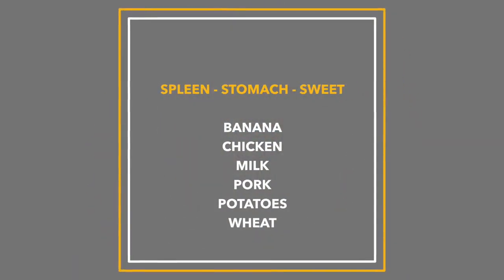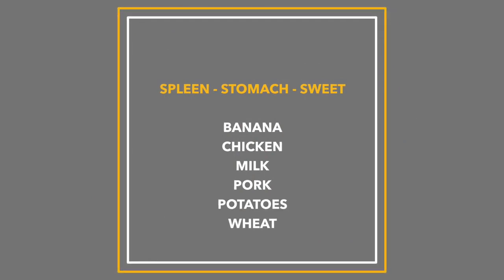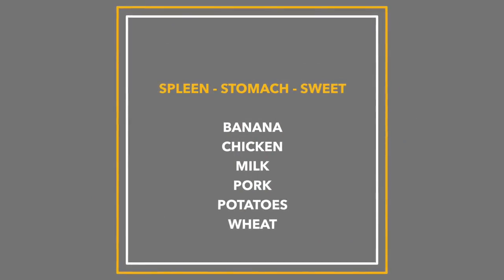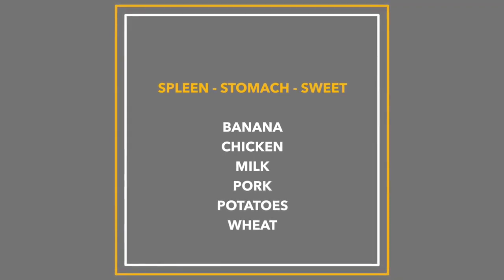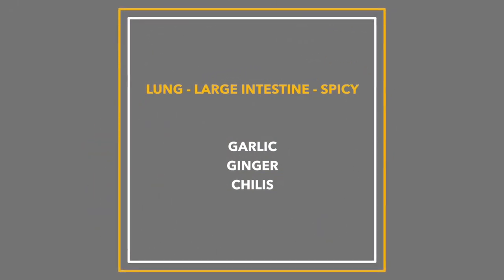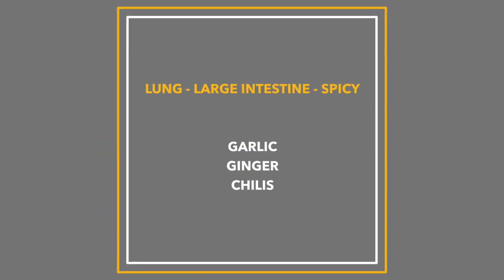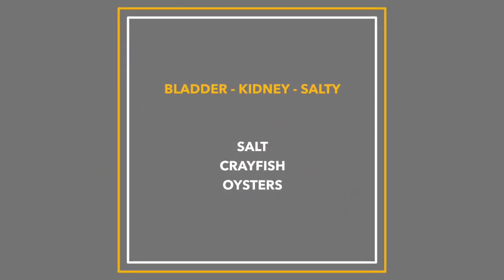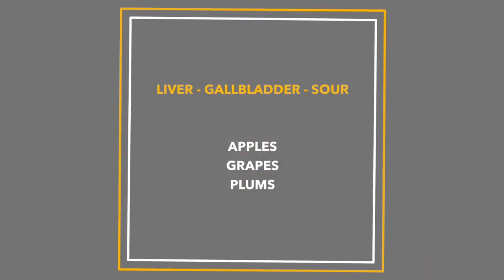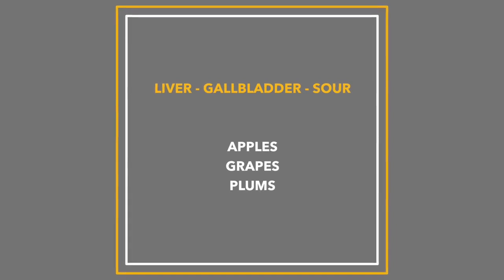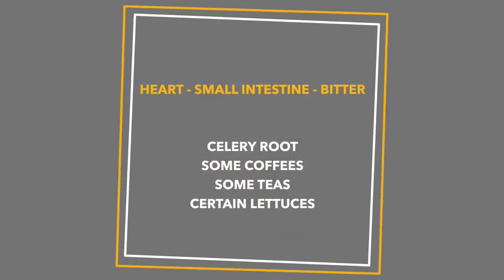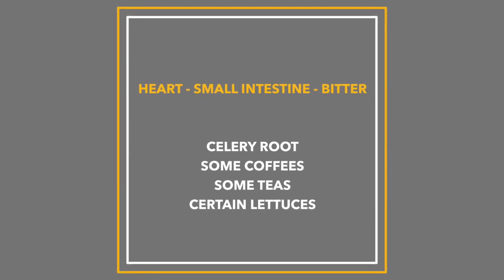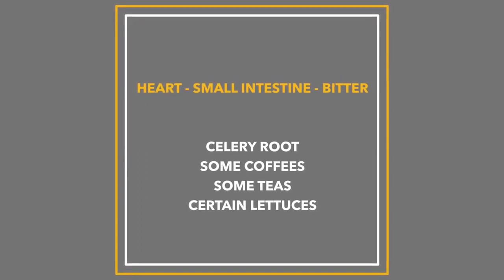When we expand this and associate certain flavors and foods with certain organ systems, you have the spleen and stomach, associated with sweet, and foods like bananas, chicken, milk, pork, potatoes, and wheat. The lung and large intestine are associated with spicy or acrid, and things like garlic, ginger, or chilies. The kidney and bladder are associated with salt, like salt, crayfish, or oysters. The liver and gallbladder are associated with sour, like apples, grapes, plum, and even some cheeses. The heart and small intestine are associated with bitter, with things like celery root, coffee, some tea, and some lettuces.